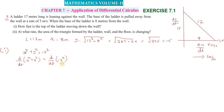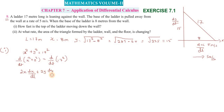Differentiating x² + y² = 17² with respect to t: 2x(dx/dt) + 2y(dy/dt) = 0, since the right side is a constant and its derivative is zero.